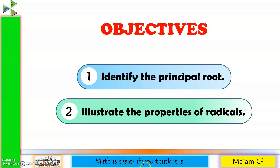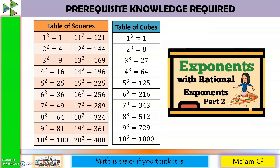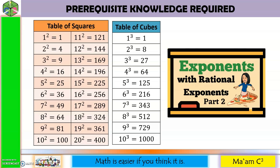Our objectives in this lesson are the following: identify the principal root and illustrate the properties of radicals. Prerequisite knowledge required are the table of squares and table of cubes. I also suggest you take time to watch my lesson on exponents part 2, where I first introduced radicals.